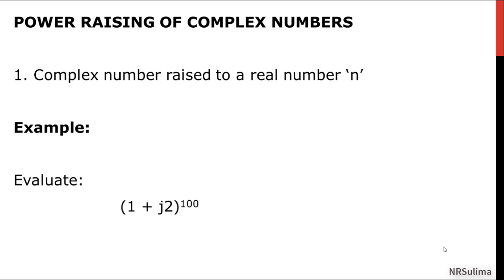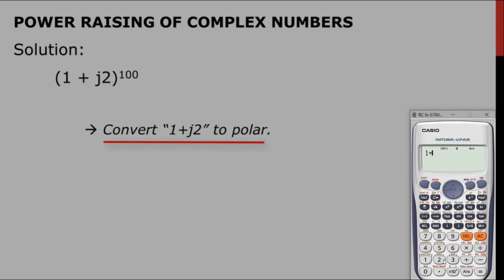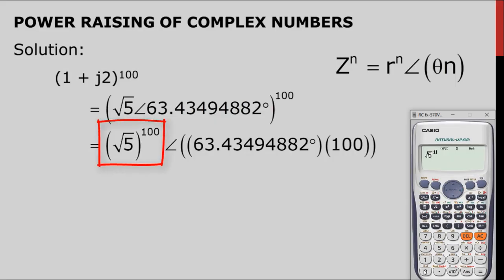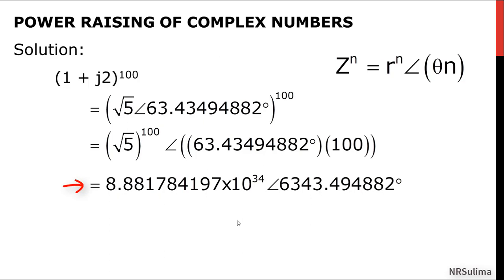For example, evaluate quantity 1 plus J2 raised to the power of 100. To solve this, convert 1 plus J2 to polar using the calculator: 1 plus 2i, shift to 3. The equivalent polar form is square root of 5, angle 63.43 degrees. Now we use the formula R to the N, angle theta times N. Simplify: square root of 5 to the power of 100 gives 8.88 times 10 to the power of 34; multiply 63.43 times 100, which equals 6,343.4. We can write our answer as 8.88 times 10 to the 34, angle 6,343.